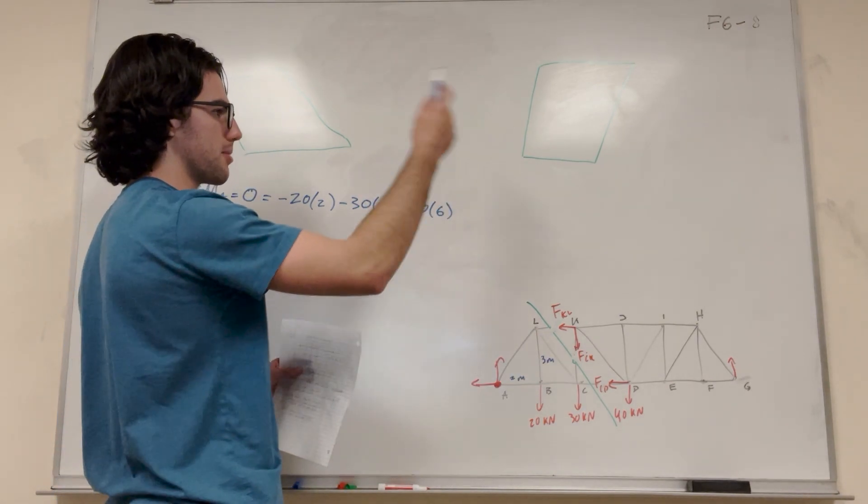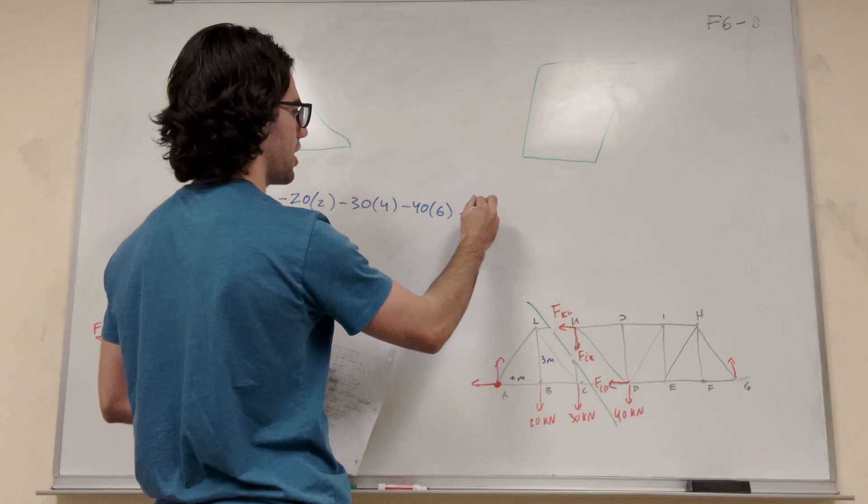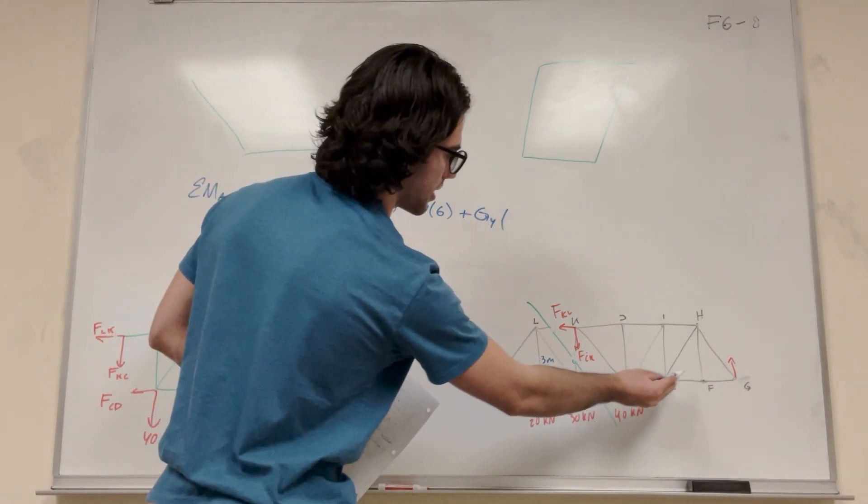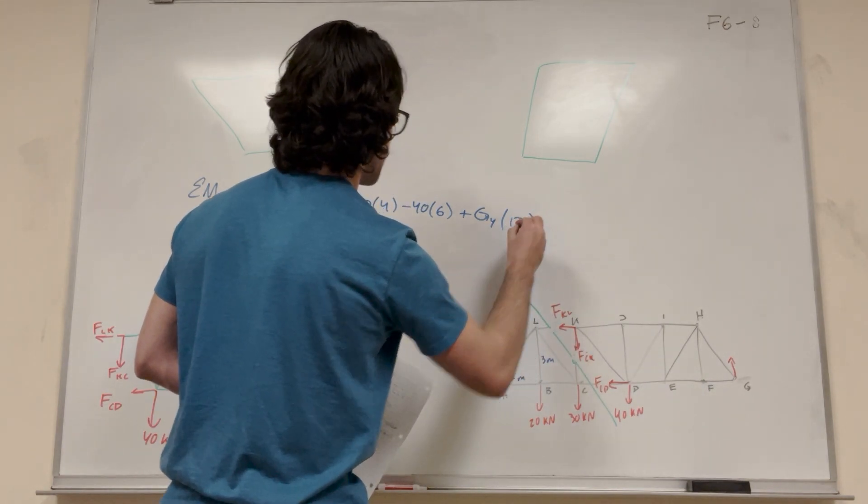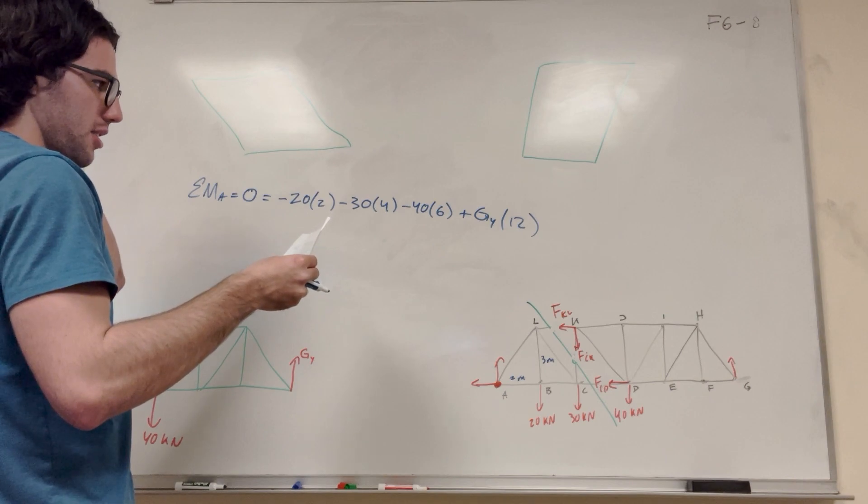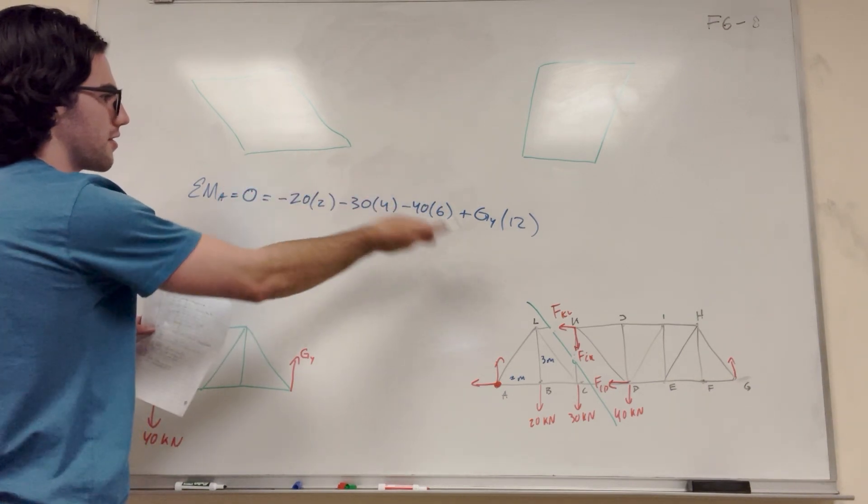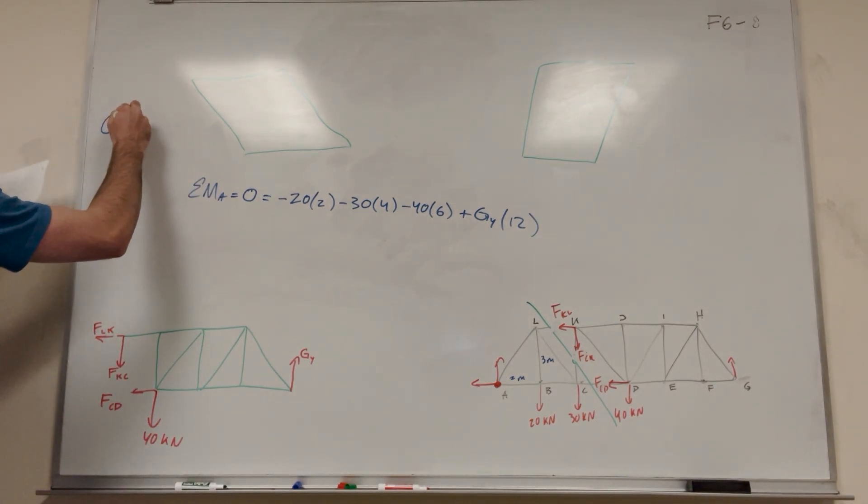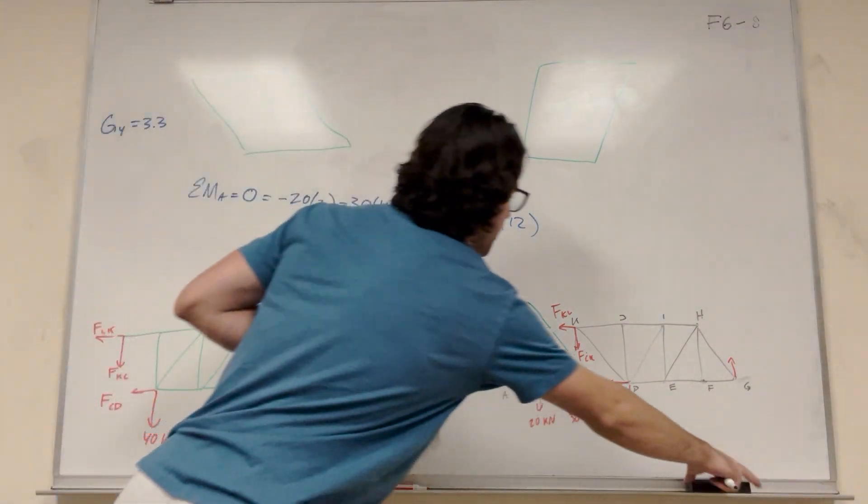And then G pushes the other way. G wants to make it go counterclockwise. So we're going to add G, since it's a G of Y. And then its distance is two, four, six, eight, ten, twelve. Right? All right, so then all we have to do is we have to add these up, move them to the other side, and divide by 12. And you're going to get that G of Y is equal to 33.3 kilonewtons.